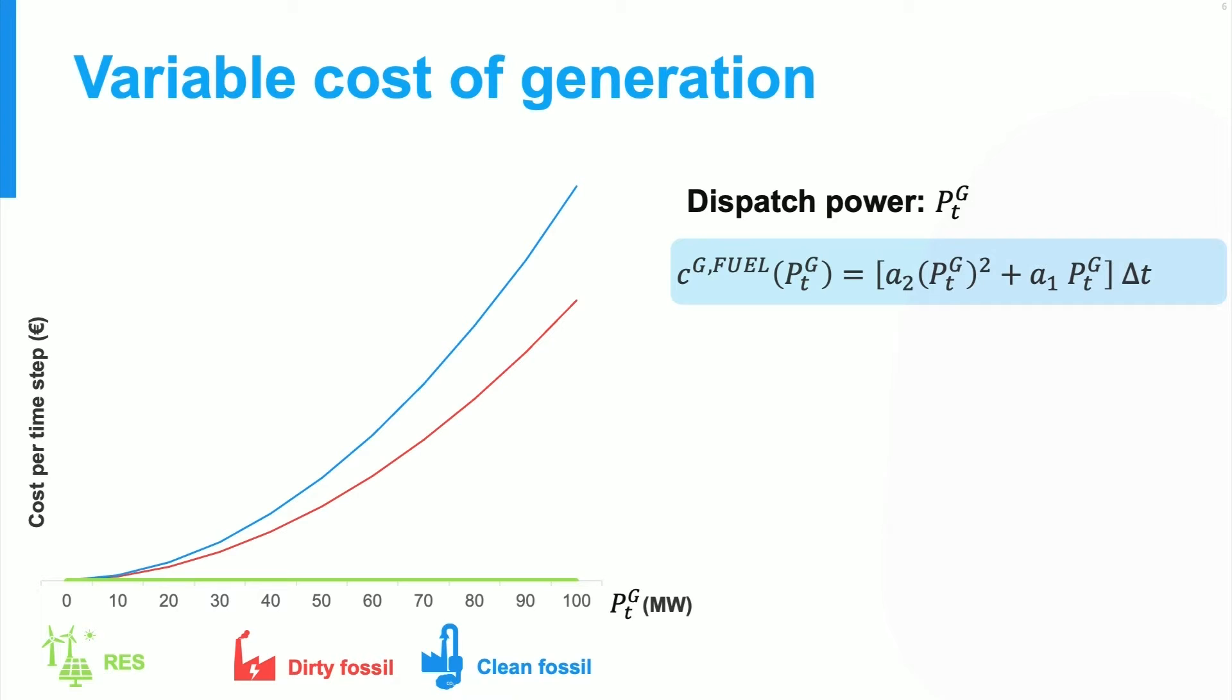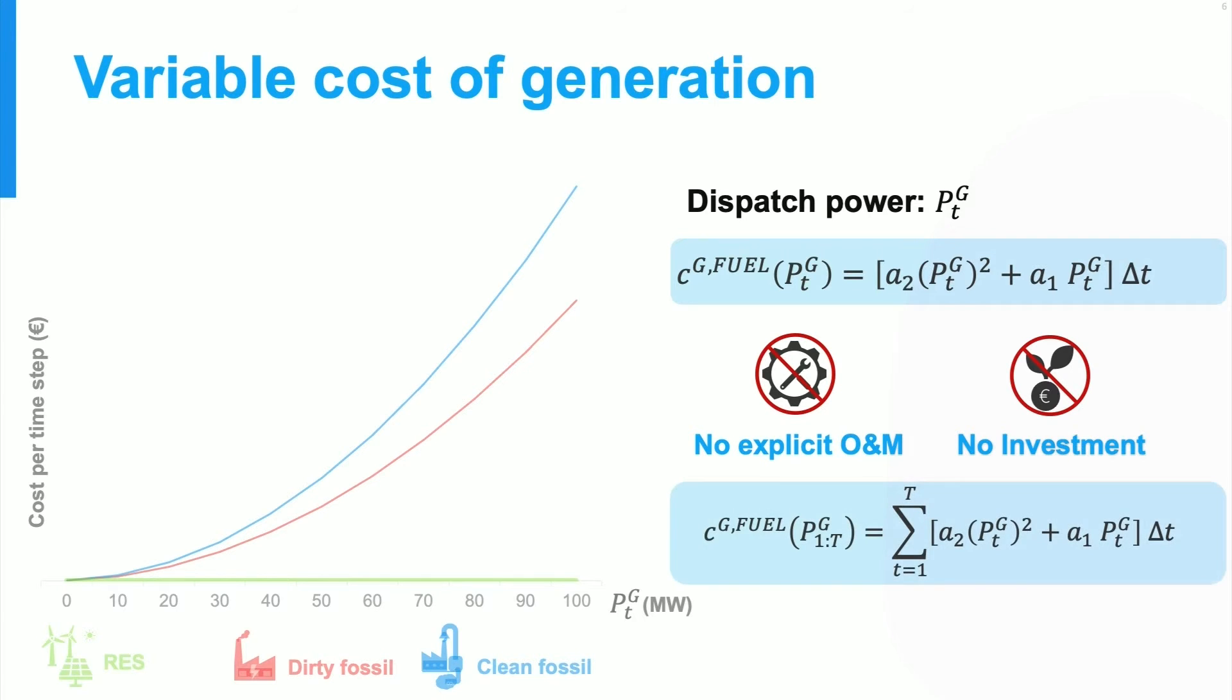And at this point I should emphasize that this model is about variable cost of generation only. So it does not include operation and maintenance costs, and nor does it contain the investment costs. Now clearly those are important for longer term decisions, but they are not part of the dispatch problem. And finally I point out that dispatch decisions often span a series of time periods. So we can add up the costs for each of these time periods to determine the total cost of dispatching a generator.